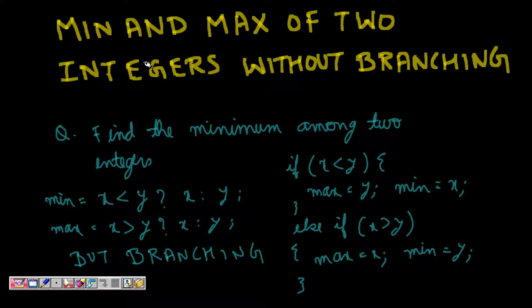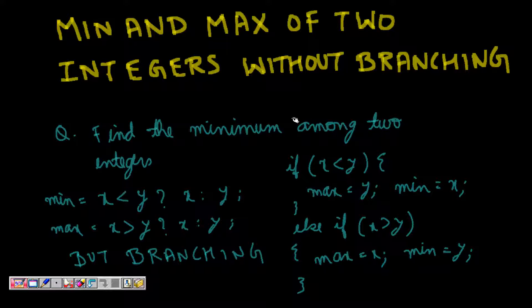Our question is to find the minimum and maximum of two integers without branching. Finding the minimum and maximum is one of the first questions you learn, but the constraint here is that you cannot branch — you cannot use anything like an if statement. If it were simple, we could say: minimum is x if x is less than y, and maximum is x if x is greater than y, otherwise it is y.